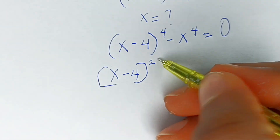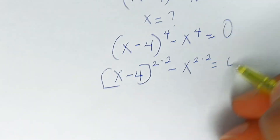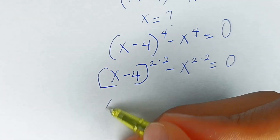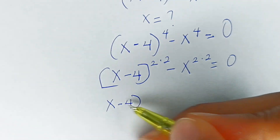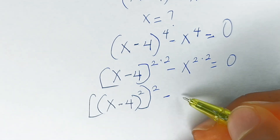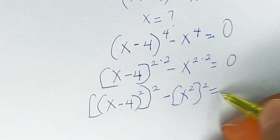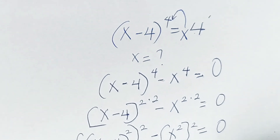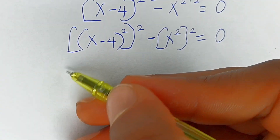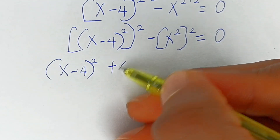Moving on, we can write this as (x minus 4) to the power of 2, multiplied by 2, minus x to the power of 2 multiplied by 2, equal to 0. We rewrite this as [(x minus 4) squared] squared minus [x squared] squared equals 0.